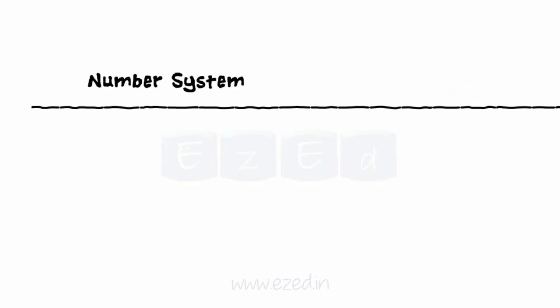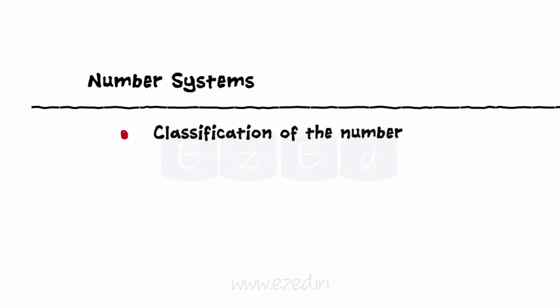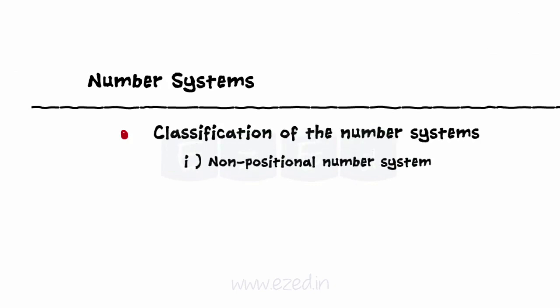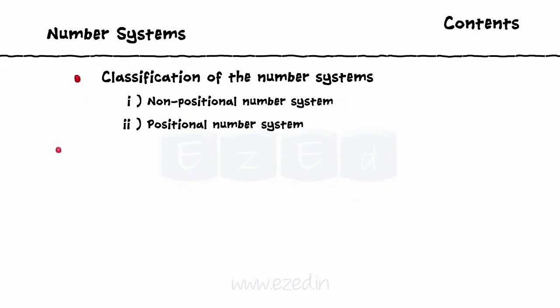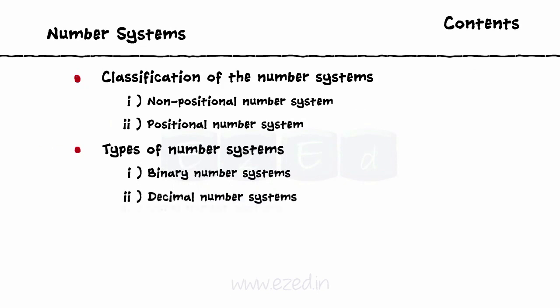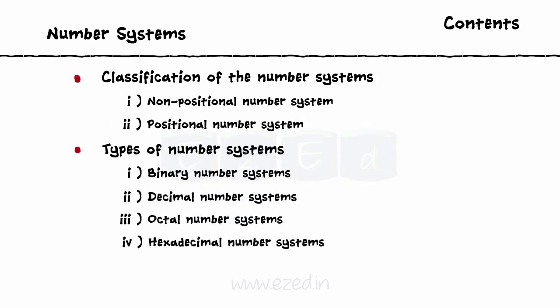In this Easy Ed video lecture, we are going to learn the number systems, classification of the number system into non-positional and positional number systems, various types of number systems such as binary, decimal, octal and hexadecimal. We will also learn the conversion from one system to another.